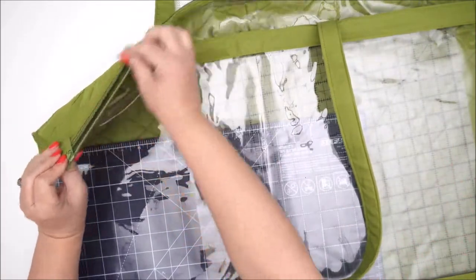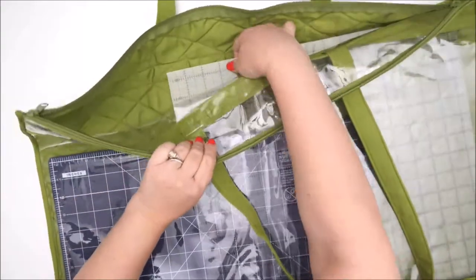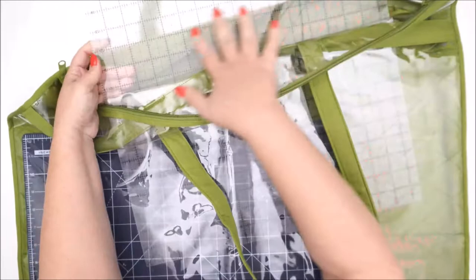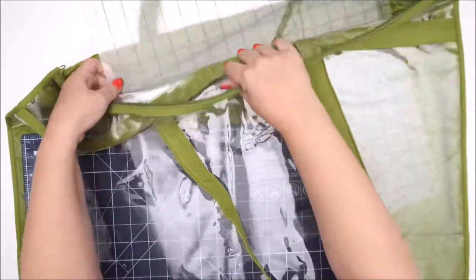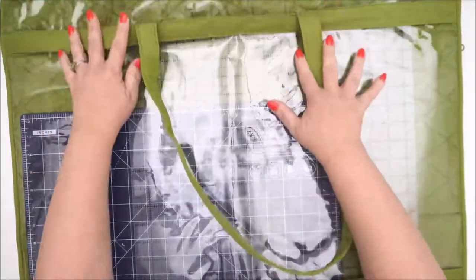Same thing, the double-ended zippers with two zipper pulls. And then here I've got a 16 and a half inch square ruler plus I've got my cutting mat. Now this bag can hold up to an 18 by 24 inch cutting mat.